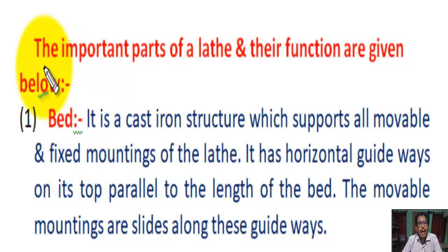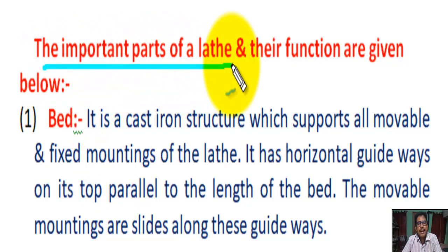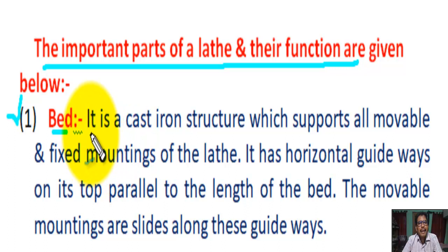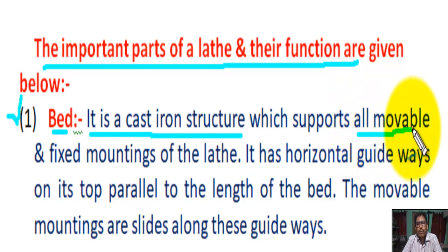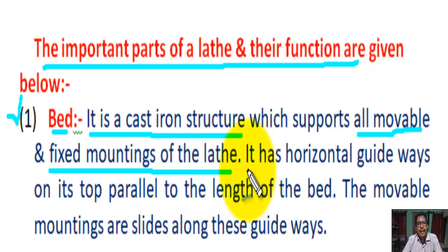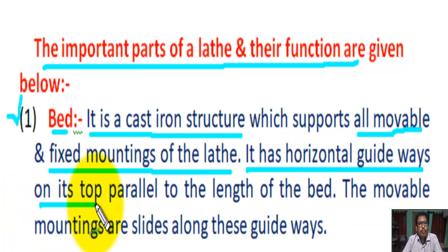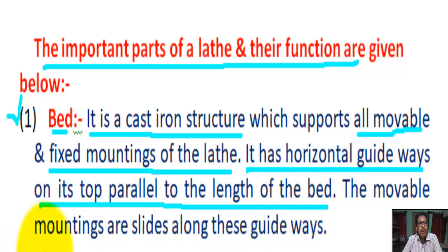The important parts of a lathe and their functions. Number one: Bed. It is a cast iron structure which supports all movable and fixed mountings on the lathe. It has horizontal guideways on the top, parallel to the length of the bed. The movable mountings — such as the tailstock, carriage, etc. — slide along these guideways.